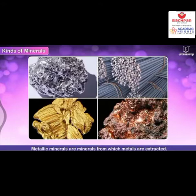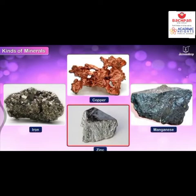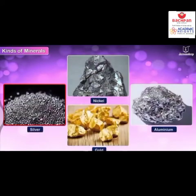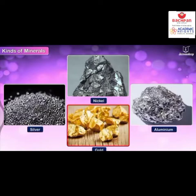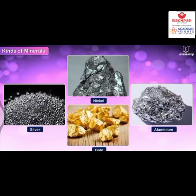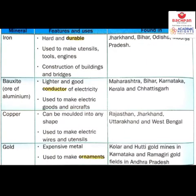Metallic minerals are minerals from which metals are extracted — aluminum, iron, copper, magnesium, zinc, silver, nickel, and gold. These are lustrous and shiny. Metallic minerals cannot be used directly after extraction; when we first extract them from the mine, they are impure, in the form of ores, and we need to refine them into metals for use.